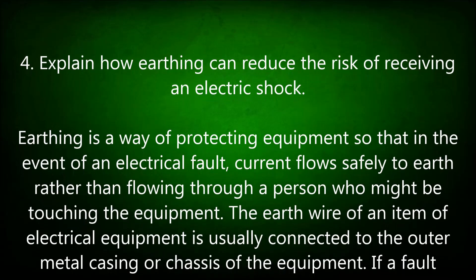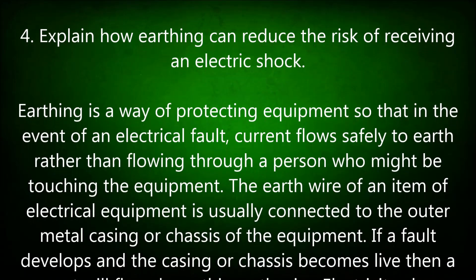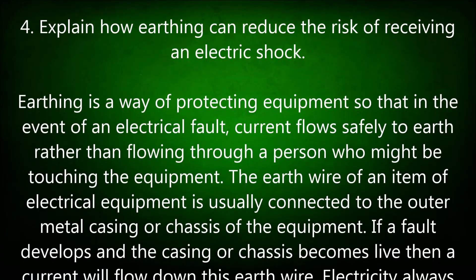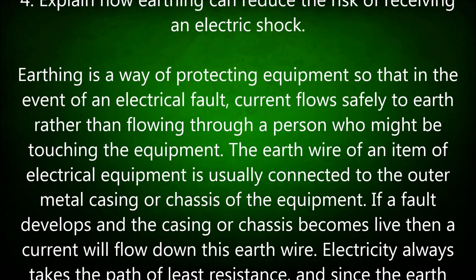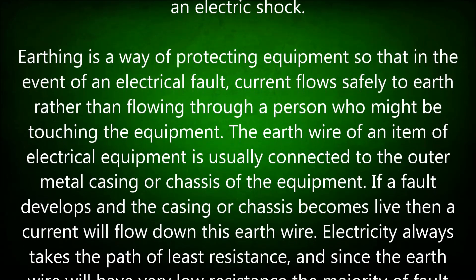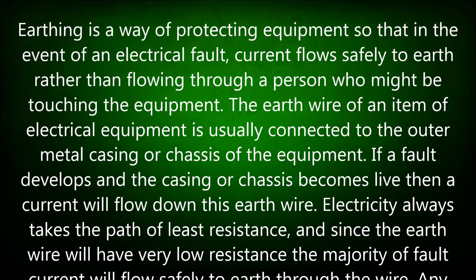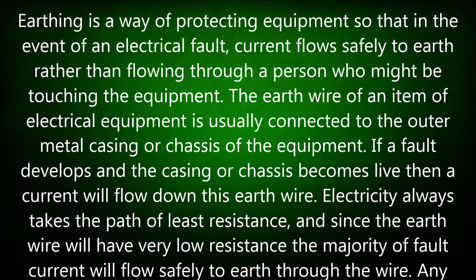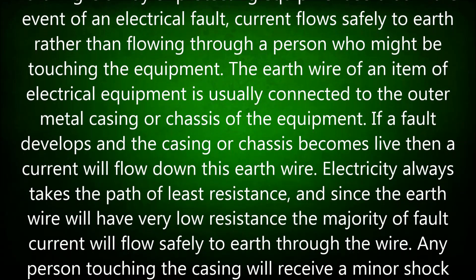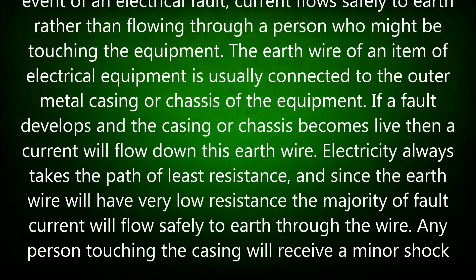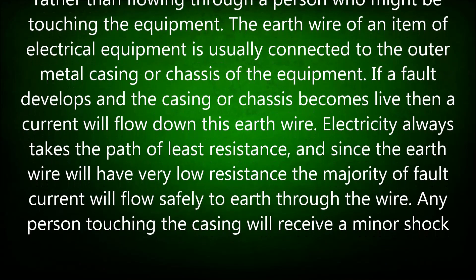Question 4: Explain how earthing can reduce the risk of receiving an electric shock. Earthing is a way of protecting equipment so that in the event of an electrical fault, current flows safely to earth rather than flowing through a person who might be touching the equipment. The earth wire of an item of electrical equipment is usually connected to the outer metal casing or chassis of the equipment.